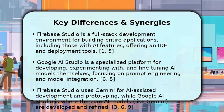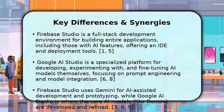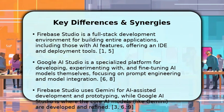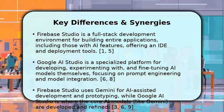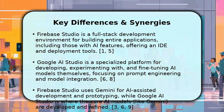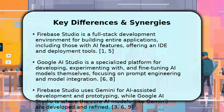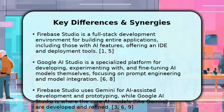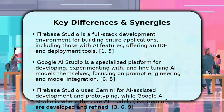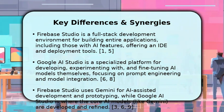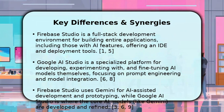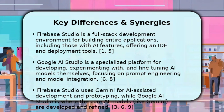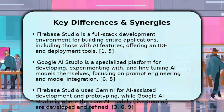The fundamental difference lies in their core focus. Firebase Studio is a comprehensive development environment for building and deploying entire applications, offering an IDE and deep integration with Firebase services, often with AI assistance. Google AI Studio, conversely, is a specialized platform for creating, experimenting with, and refining AI models themselves, particularly generative AI. While Firebase Studio helps build the app, Google AI Studio helps build the intelligence within or for that app. Many modern projects might leverage both, using Firebase Studio for the application structure and Google AI Studio for its advanced AI functionalities.